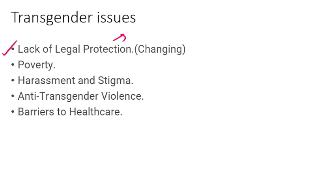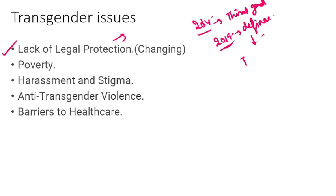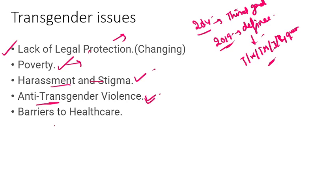Transgender issues: lack of legal protection — लेकिन यह change हो रहा है। Election Commission 2009, NALSA case 2014, और 2019 act के through legal protection बढ़ी है। Poverty भी इनके लिए एक issue है। Harassment and social stigma face करना पड़ता है। Anti-transgender violence काफी ज़्यादा होती है — physical, emotional, sexual abuse। Barriers to healthcare भी हैं — hospitals में जाने में कितने कम transgenders होते हैं, access करने के लिए वो healthcare services को। ये सारे barriers इनके लिए हैं।